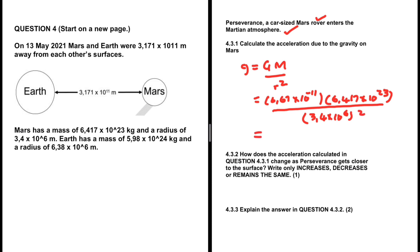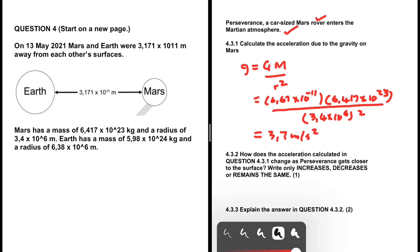Putting that into my calculator, I'm getting 3.7 meters per second squared. Now here is a question for you, problem 4.3.2: how does the acceleration calculated in 4.3.1 change as the rover gets closer to the surface? Does the acceleration due to Mars' gravity increase, decrease, or remain the same as an object approaches the surface? Let me know in the comments.